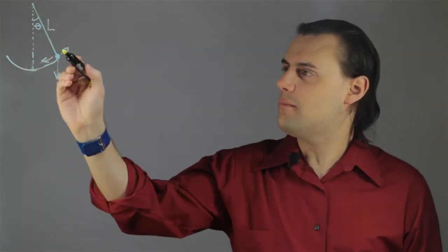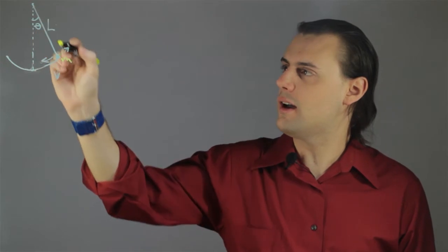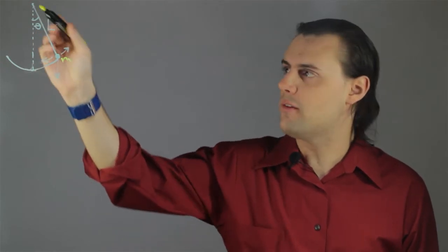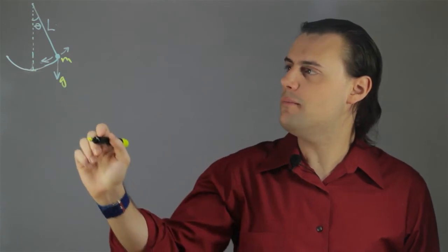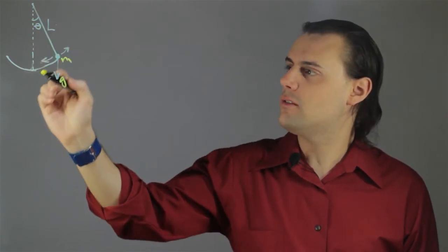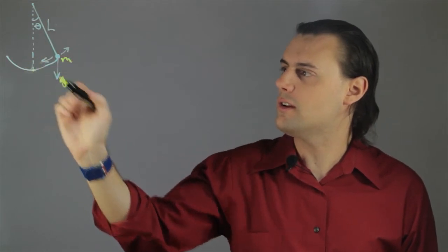So here I have a pendulum described by a mass, and it's held taut by a string of length L from a pivot point. And then I have a gravitational acceleration g, and this angle by which the mass oscillates about the center point here.